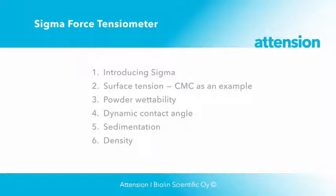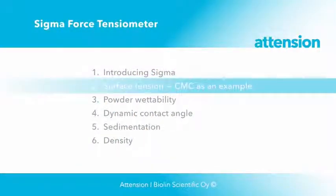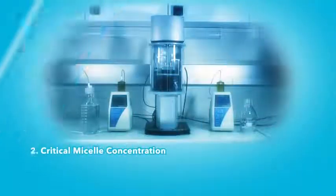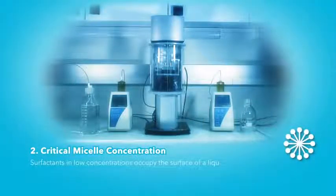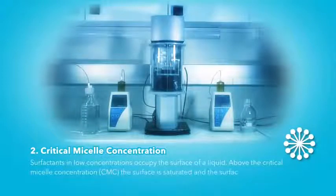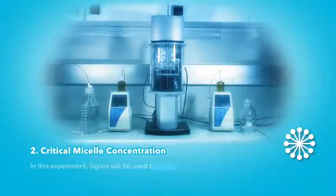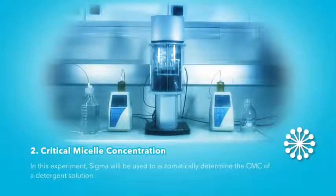Next, a surface tension is measured to determine critical micelle concentration. Surfactants in low concentrations occupy the surface of a liquid. Above the critical micelle concentration, the surface is saturated and the surfactants form micelles. In this experiment, sigma will be used to automatically determine the CMC of a detergent solution.